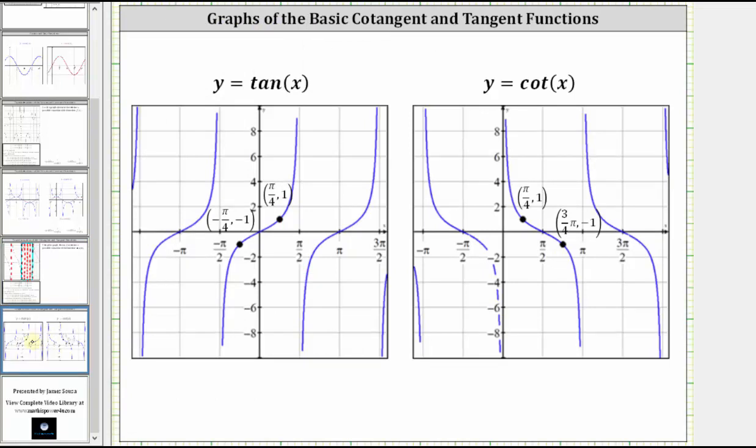So let's focus on one piece of the basic cotangent function to help us determine a possible function for the given graph. Let's get to the vertical asymptote at x equals zero and x equals pi. Let's cut this interval into four equal sub-intervals, so we have x equals pi over two, x equals pi over four, and x equals three-fourths pi.